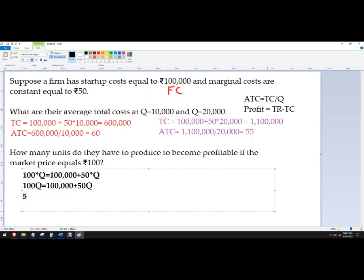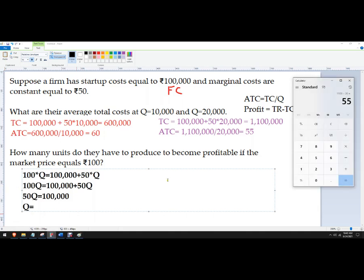And so now let's just take that over to the other side. It's 50Q equals 100,000, and then Q equals... let's put it in the calculator to make sure I get the right answer here.